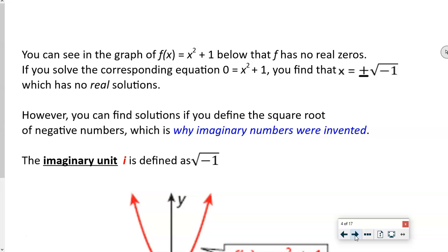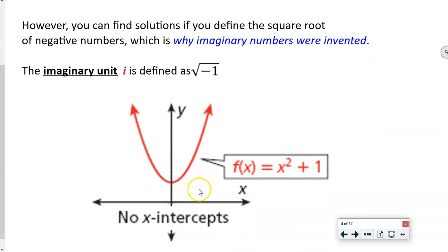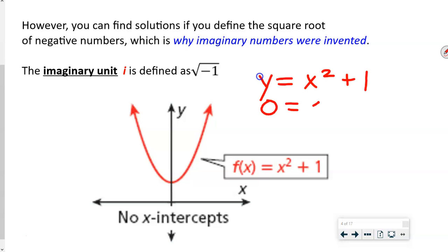You can see in the graph of f of x equals x squared plus 1 that it has no real zeros. Let me scroll up a little bit so you can see that. See how it doesn't have any x-intercepts? It does not intercept the x-axis at any point.